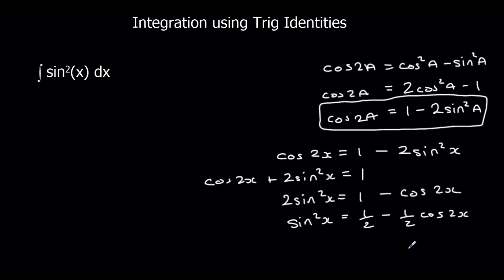So I can substitute in, so I can get rid of sin²x and change it to half minus half cos2x. So I'm going to change the question to half minus half cos2x with respect to x. And now I've got something I can integrate.